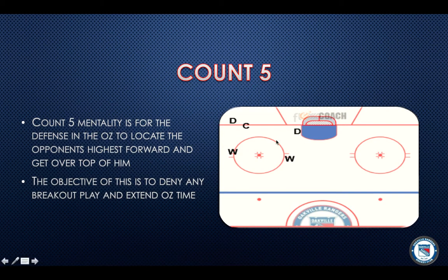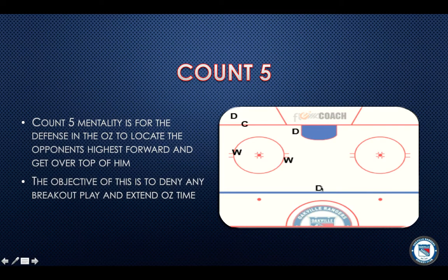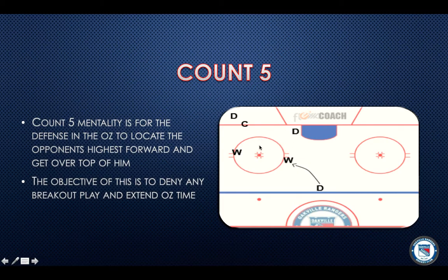The objective is to deny any breakout play to that highest forward and to extend O-zone time — create a turnover so we can play in the offensive zone more. This diagram shows a team's traditional D-zone coverage: strong-side D in the corner, center supporting, D near the net, winger on the strong side, and the opponent's highest forward. What we usually see is a weak-side D staying put on the blue line with feet still. If this guy gets the puck, he has tons of time and space. What we want is D constantly moving and closing the gap on that forward so when he gets the puck, we're right tight to him, making a stick-on-puck play, creating a turnover and extending our offensive zone.